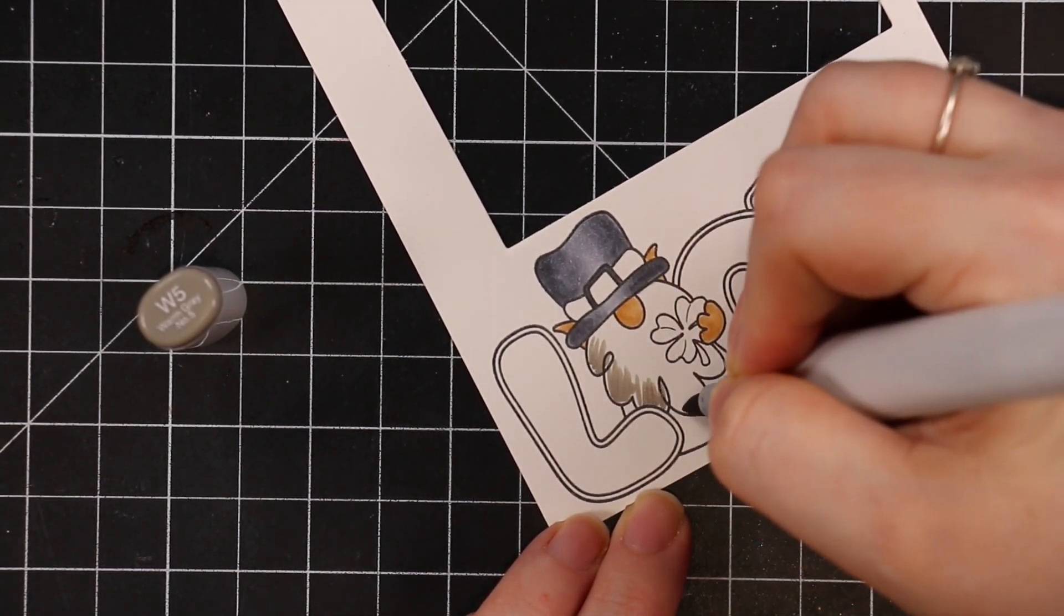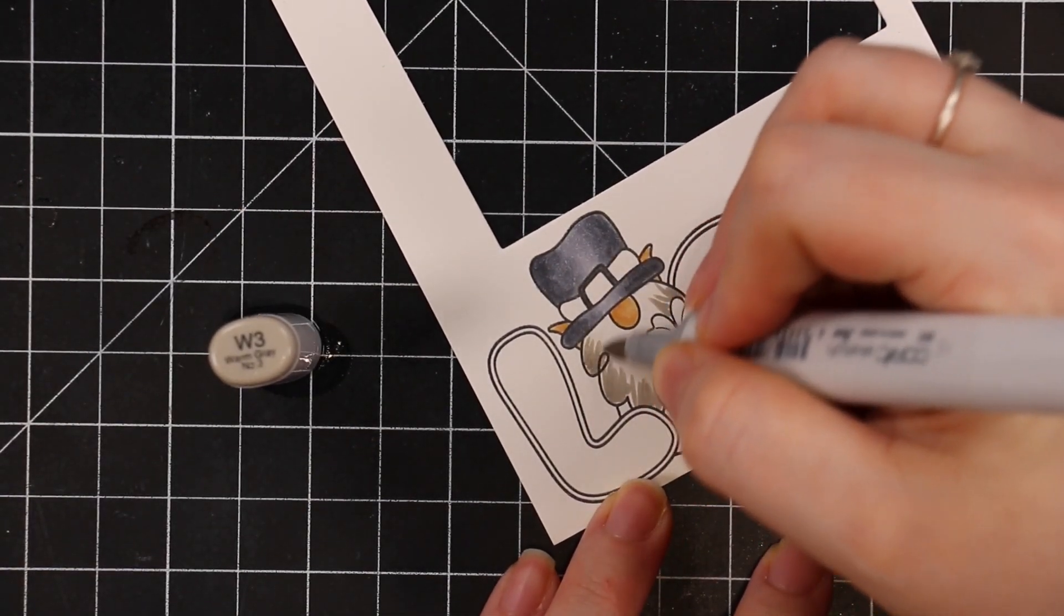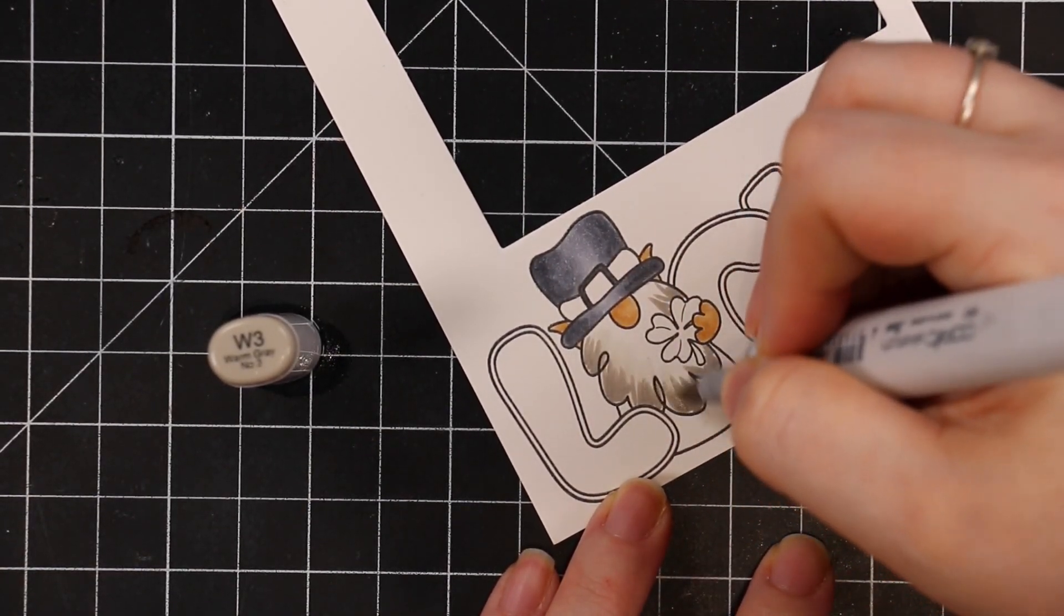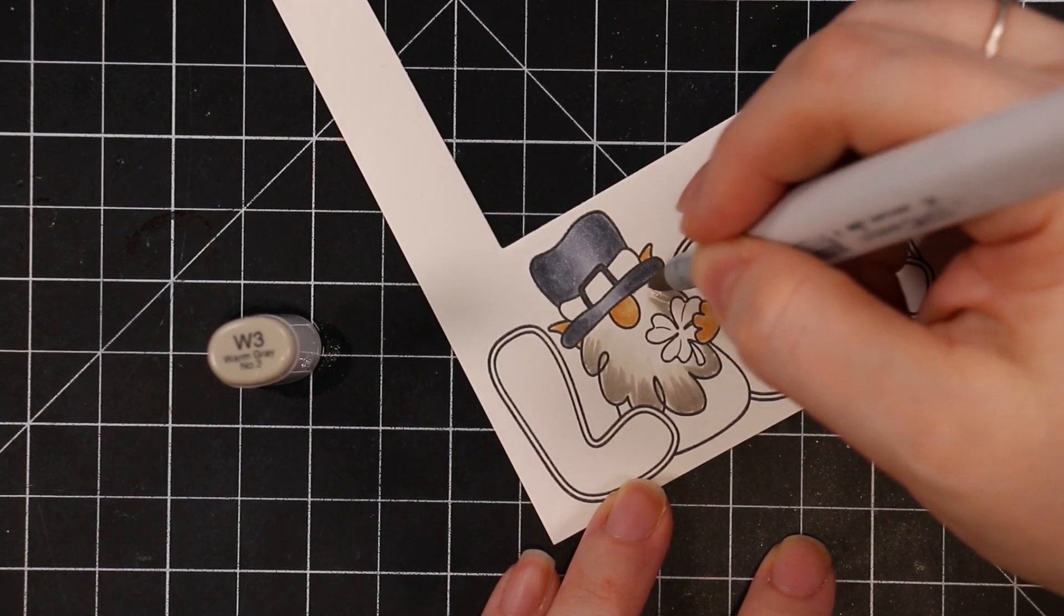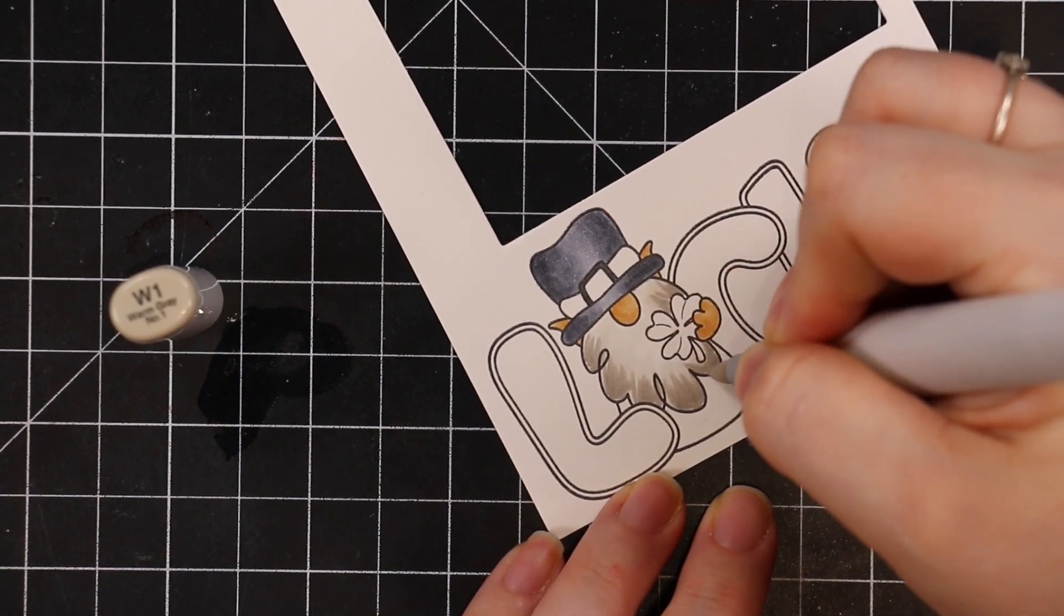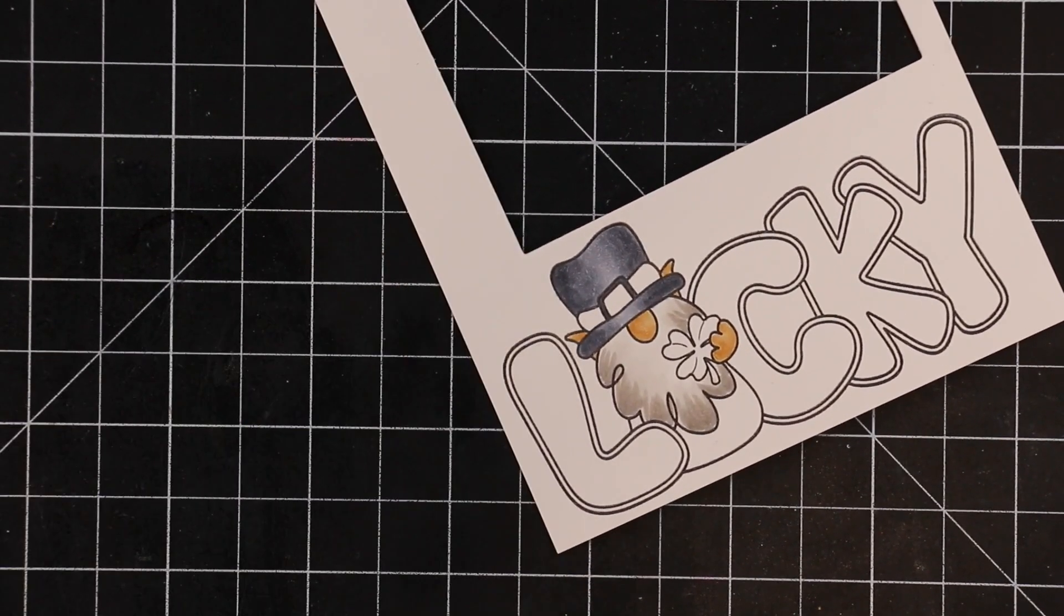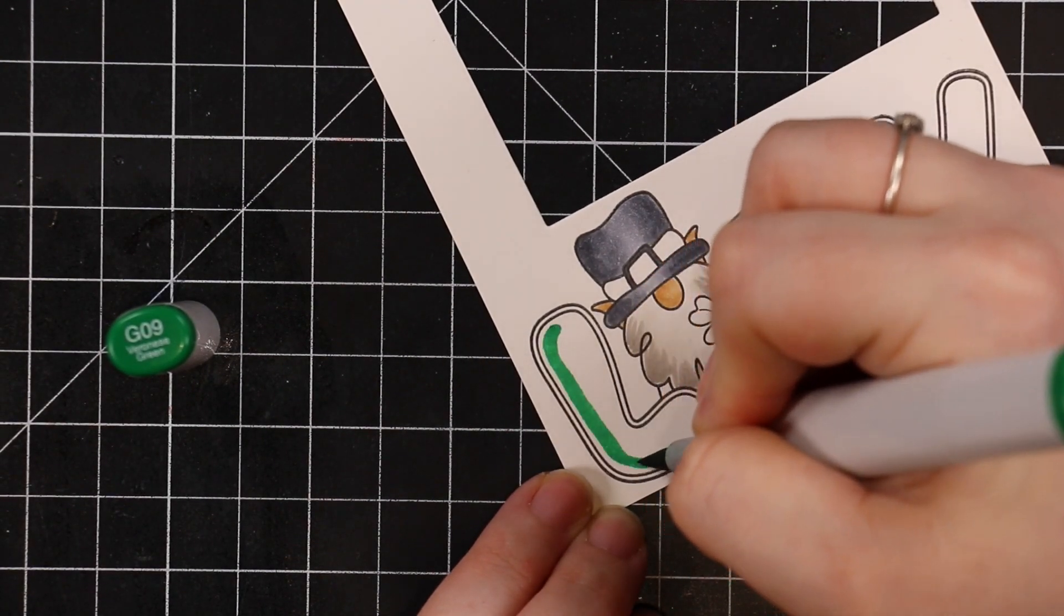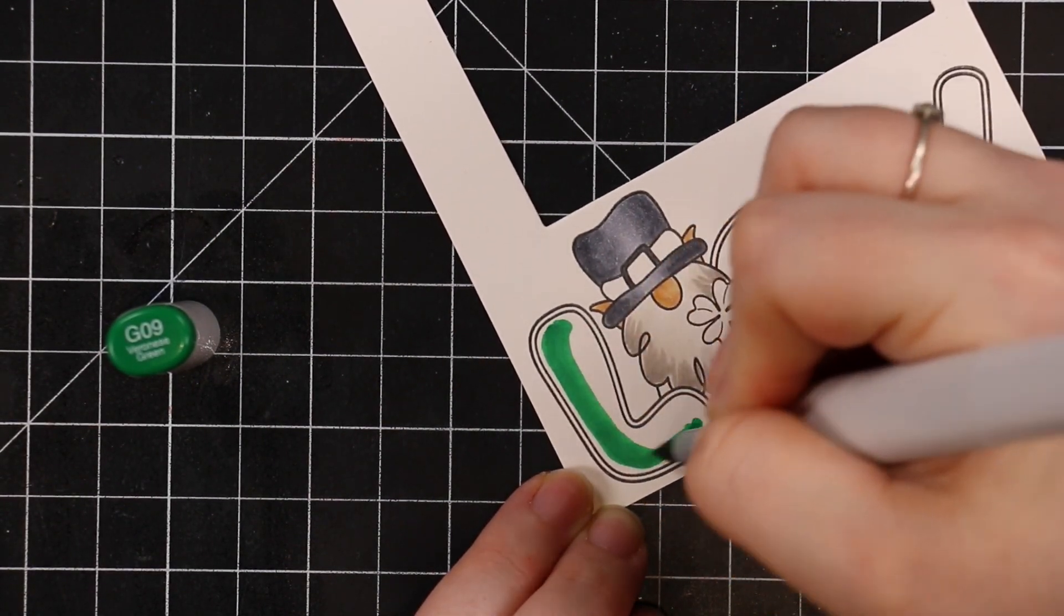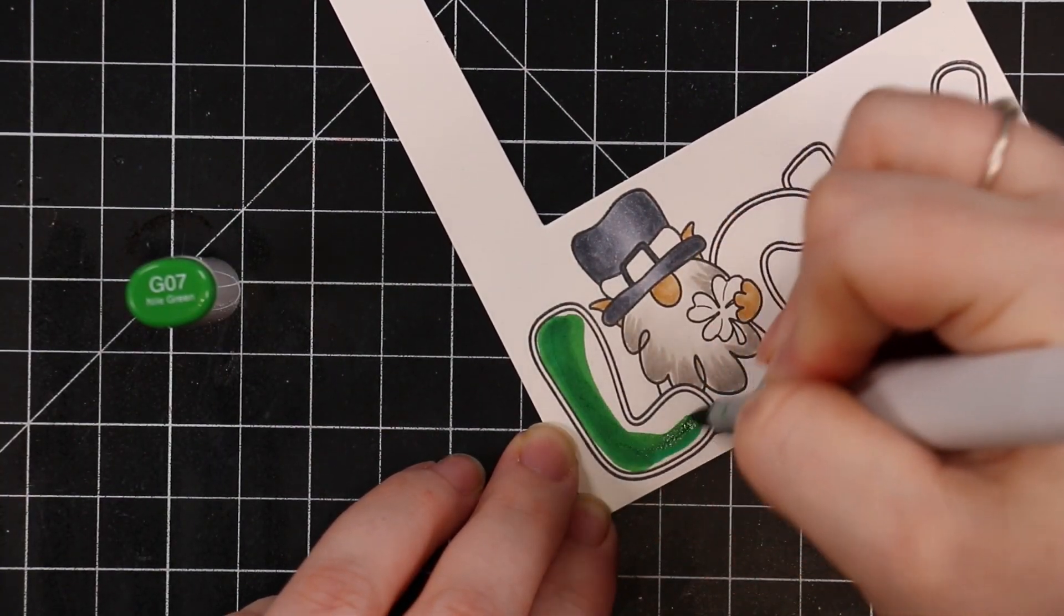I did the cool grays for his hat, then the little bits of skin tone, then warm grays for his little beard with a flicking motion to give it texture. I stuck with one combo of greens for all the lettering and his outfit: G09, G07, and G05.